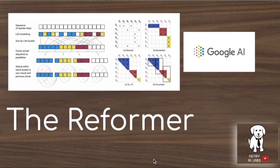Thanks for watching this overview of the Reformer Efficient Transformer architecture from Google AI. I hope this explanation gave you a good sense of how reversible layers help avoid storing intermediate activations, and a general sense of what locality-sensitive hashing is about and how it reduces the memory cost of attending over long sequences. Thanks for watching, and please subscribe to Henry AI Labs for more deep learning and AI videos.